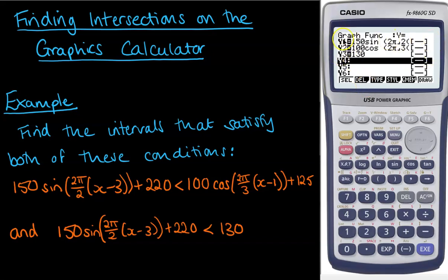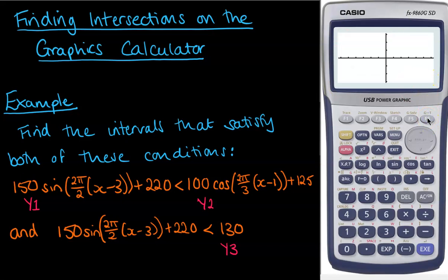On the screen now you can see we've got the 150 sine equation entered as equation y1, the 100 cos one is entered as equation y2, and the line to make the 130 to help us see that cutoff point is entered as y3. Now we press F6 to draw that function.